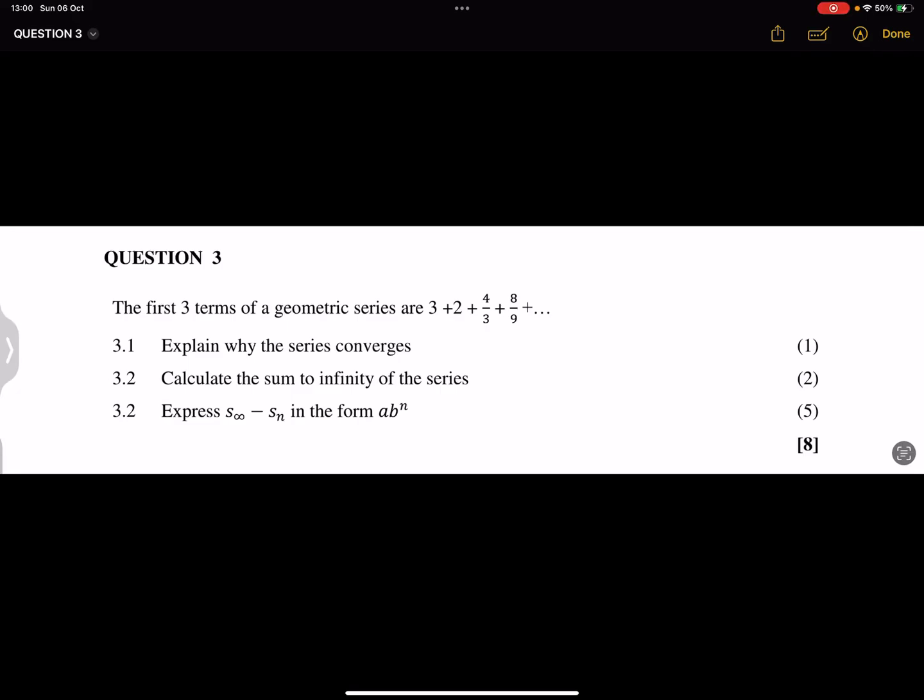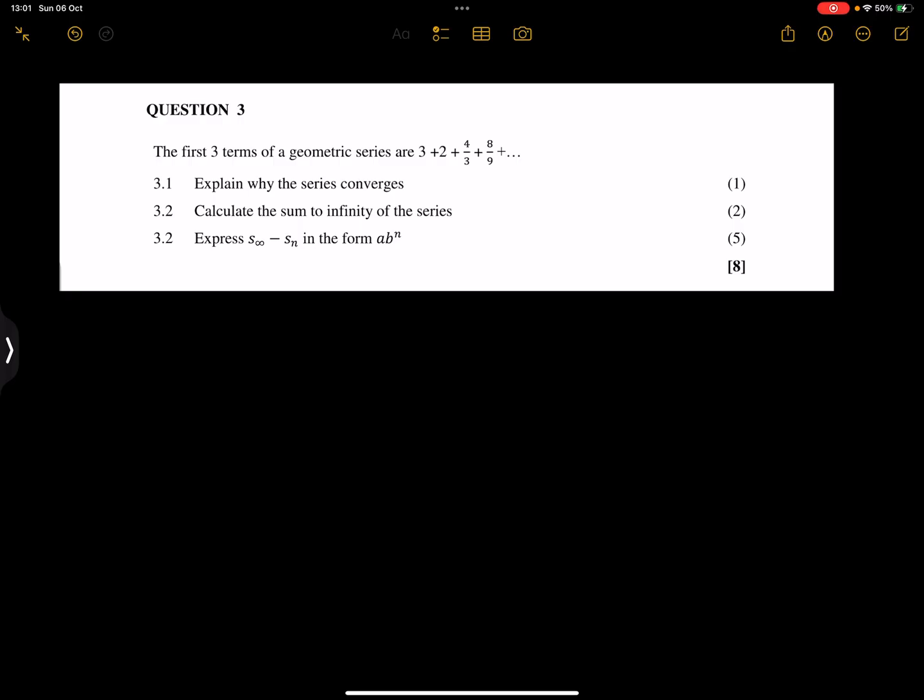Right, let's look at question three. They say the first three terms of a geometric series are as follows: that's 3, 2, 4 over 3, and 8 over 9. They say explain why the series converges.